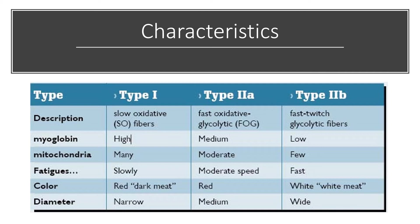In terms of myoglobin, since type 1 and type 2A are highly aerobic with oxidative capacity, it makes sense that they would have more myoglobin. Myoglobin is similar to hemoglobin — it carries oxygen — but myoglobin is specific to muscle. Type 2B has very low myoglobin content. Similarly, type 1 and type 2A have a lot of mitochondria, which process the ATP created through aerobic metabolism, allowing those fiber types to sustain power output for a long period of time.